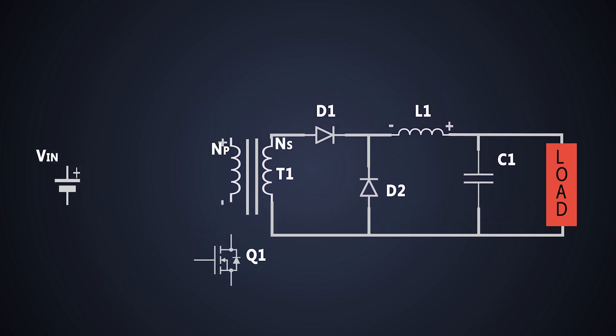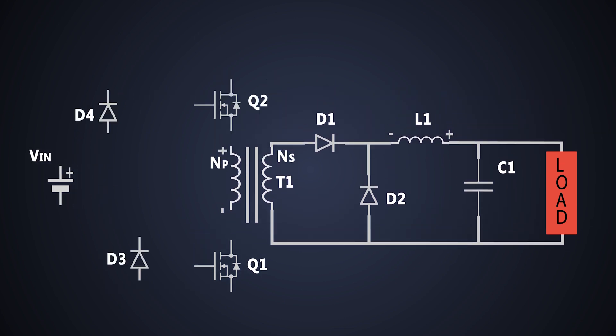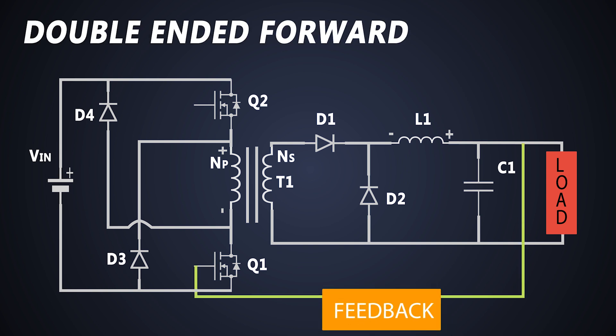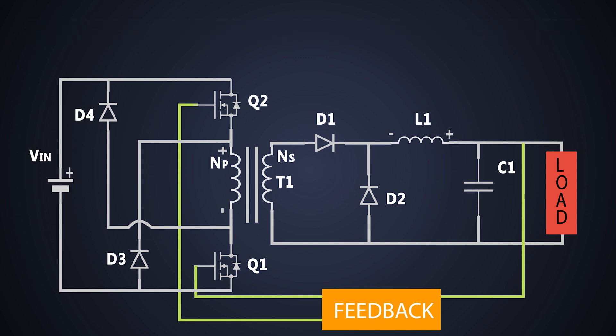We can add two diodes and two MOSFETs like this in the circuit. This configuration is known as double-ended forward converter. It is also known as a two-switch forward converter or a two-transistor forward converter because it has two active switches.